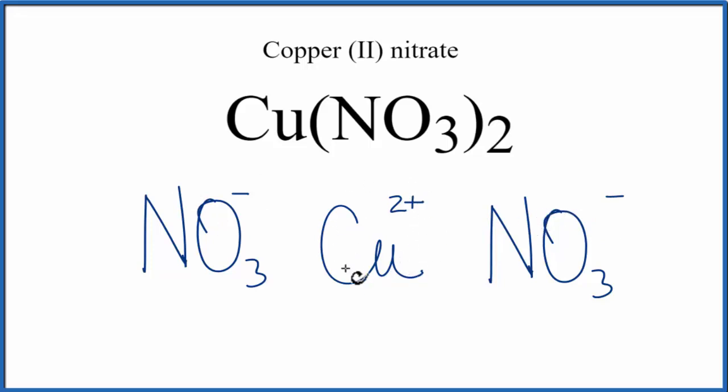So the copper had two valence electrons. One went to this group here, the other went here, and that left it with a plus 2.